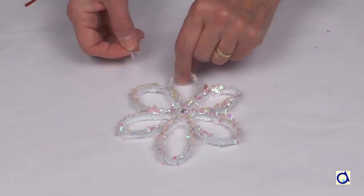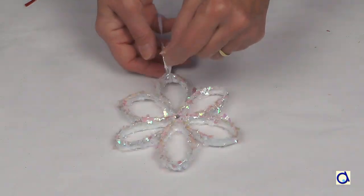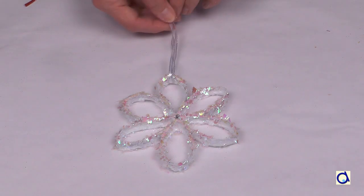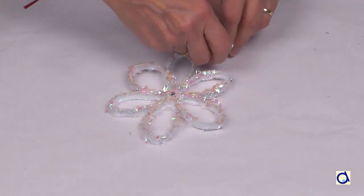When the glue is dry, pass a ribbon through one of the tips of the snowflake. Your snowflake is now ready to hang in the Christmas tree.